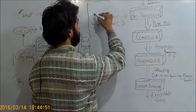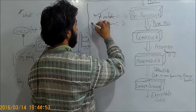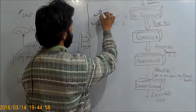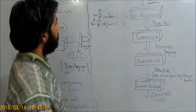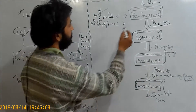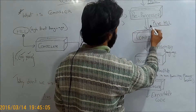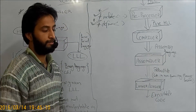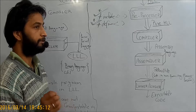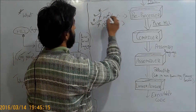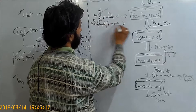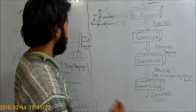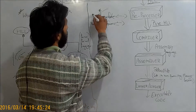After including and defining, the preprocessor removes those hashtag lines. The pure high-level language is the language that does not contain any hash lines. So the main function of the preprocessor is to remove our hash lines and produce pure high-level language.